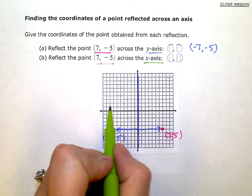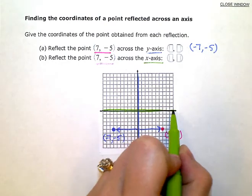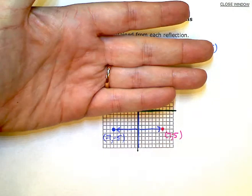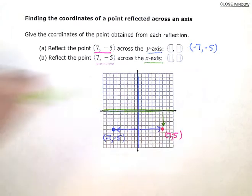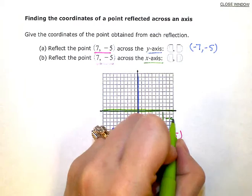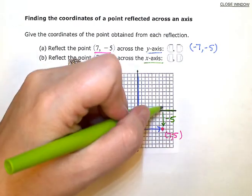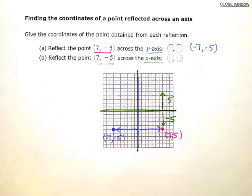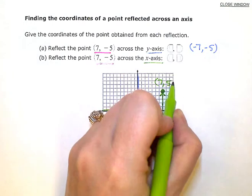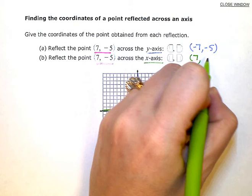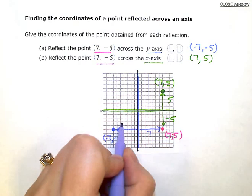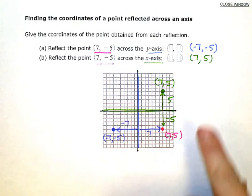This time we're reflecting up and down across the horizontal x-axis. My point is going to reflect from the bottom and flip right up to the top. My point is 5 units below, so when I flip it, it's going to be 1, 2, 3, 4, 5 units above. My new point will be right here — the 7 hasn't changed, it's just now positive 5 instead of negative 5. So this will be (7, 5). Those are my two answers: reflecting across the y-axis gives (-7, -5), and reflecting across the x-axis gives (7, 5).